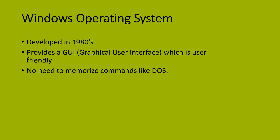Windows introduced the mouse as a pointing input device. It was very easy to give input through mouse — you just click something and it opens up, you click the cross and it closes. Whereas in DOS, you had to write whole commands to open or close anything. So Windows was very user-friendly, and that's why it became so commonly used even today.